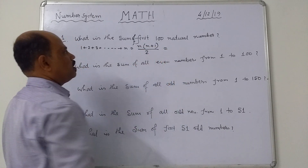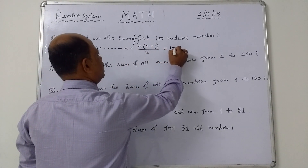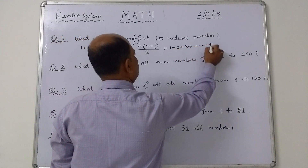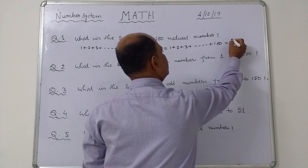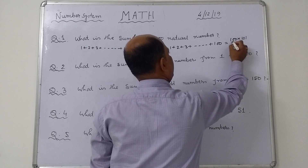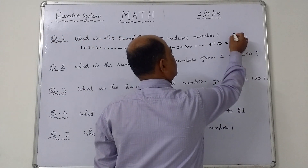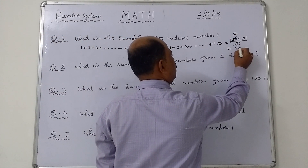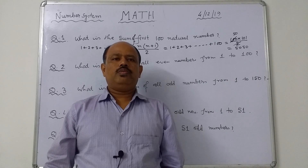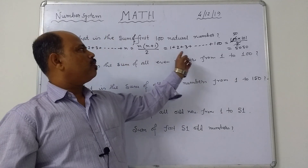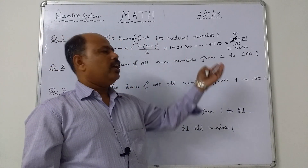You see that in place of n, there are hundred natural numbers, that is 1, 2, 3, dot dot dot up to 100. In place of n, the value is 100. Then, 100 into 101 by 2. After calculation, the value is 5050. So, the sum of the first hundred natural numbers is 5050.